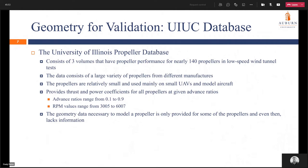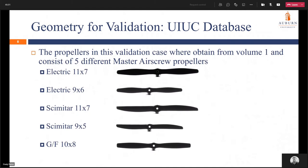The geometry data necessary to model a propeller inside the database is only provided for some of them, and even then it lacks information. The five propellers chosen for this validation were obtained from volume one and consist of five different Master Air Screw propellers: an Electric 11x7, an Electric 9x6, a Syntar 11x7, a Syntar 9x5, and a GF 10x8. All these propellers are shown to the right of their names and should be scaled with respect to each other.